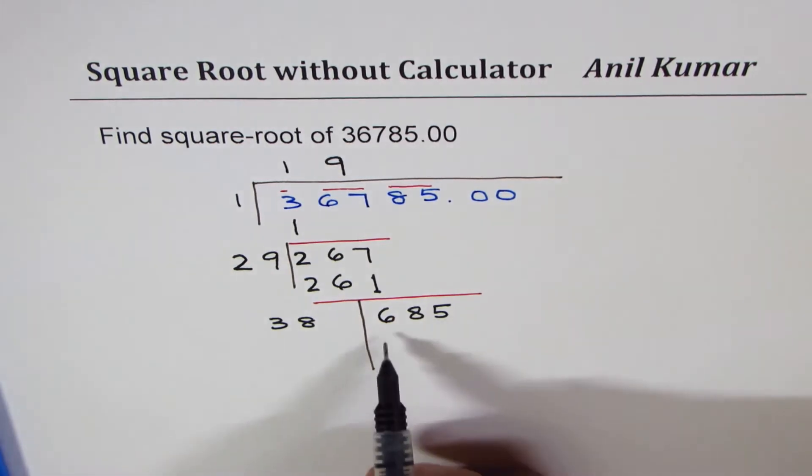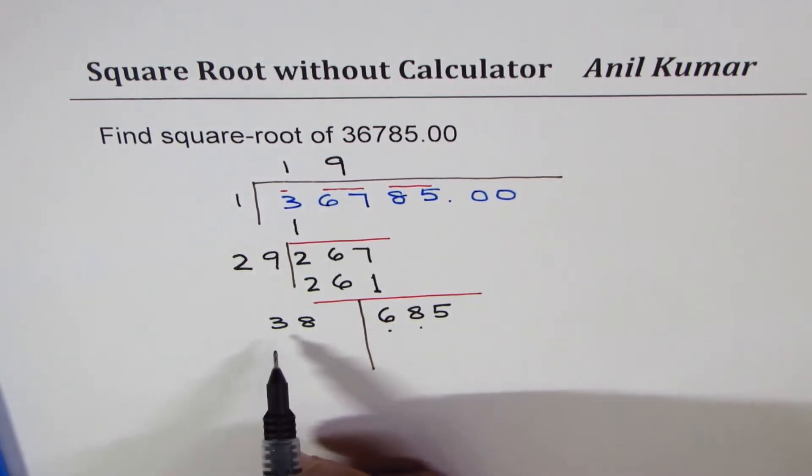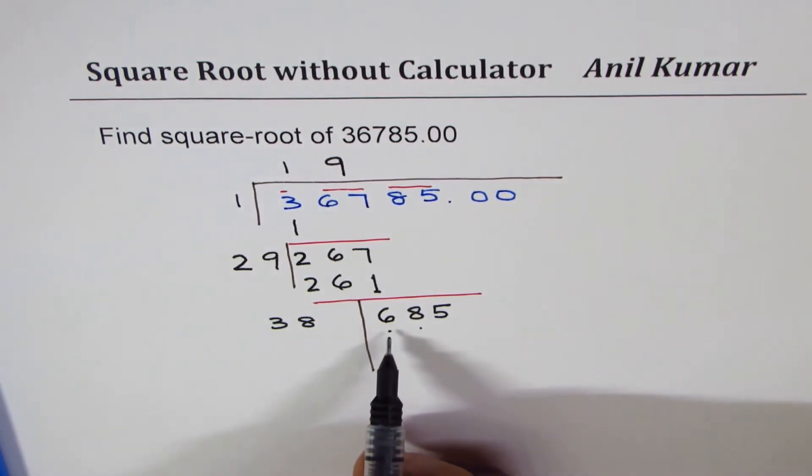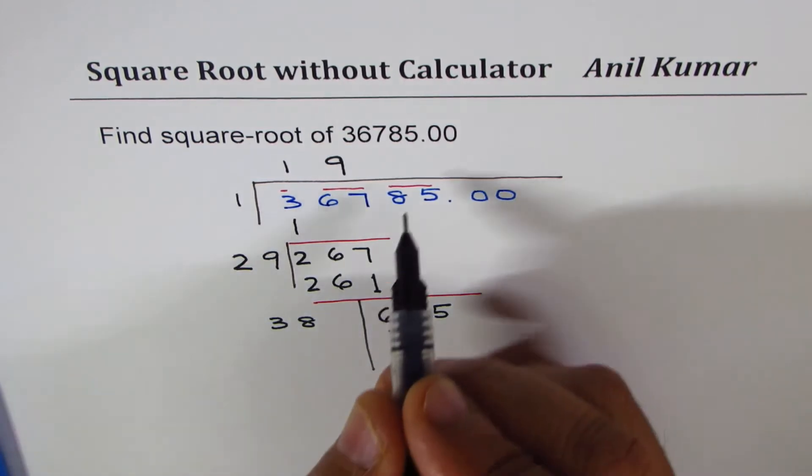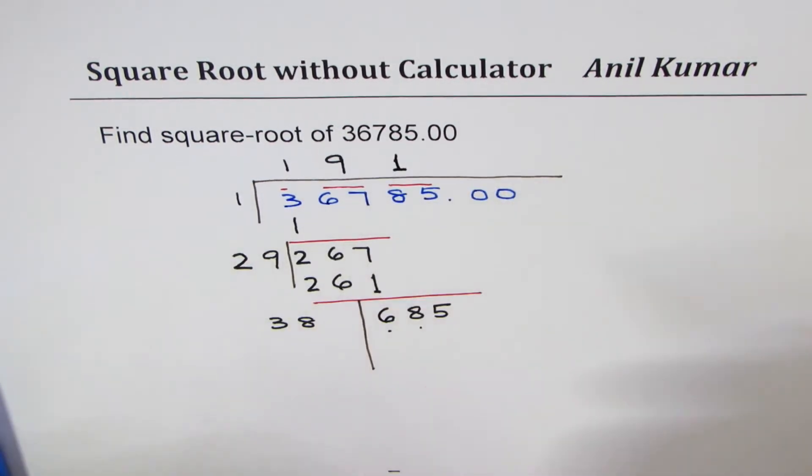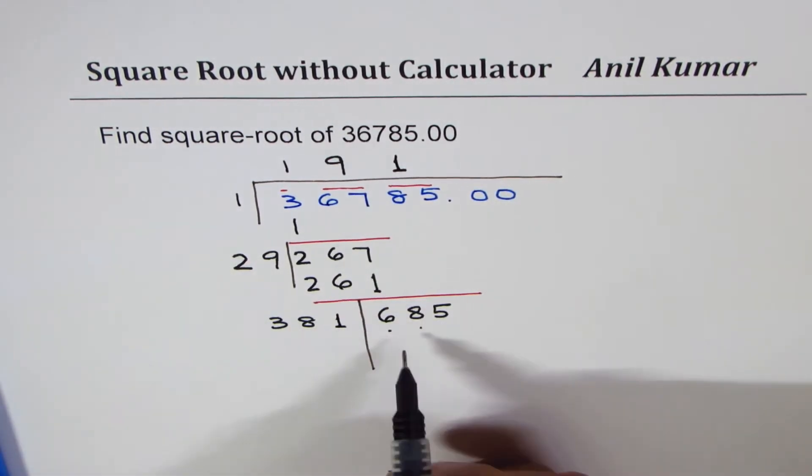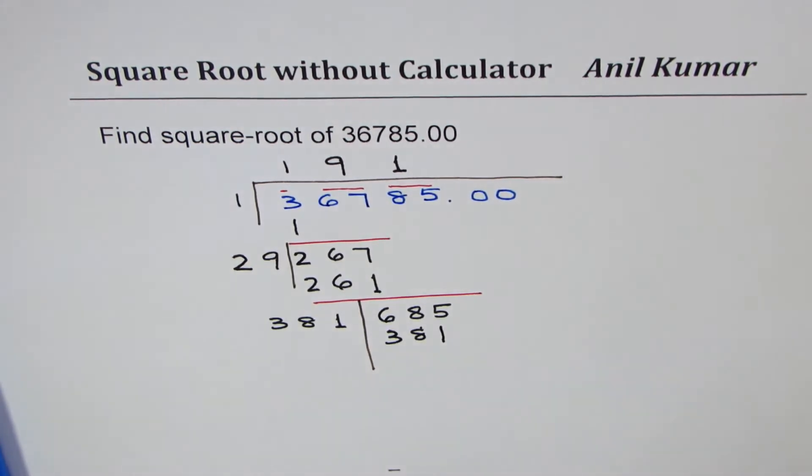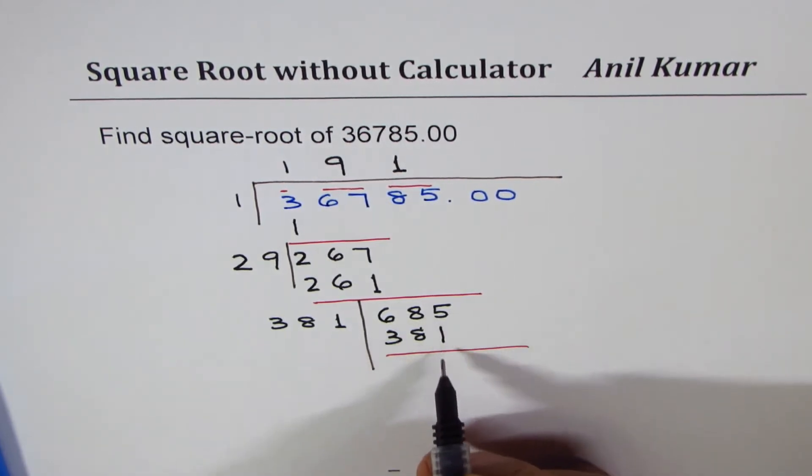So 38, if I take two then it is going to be seven something, so I can only take one. Let me write one here and one there, so that gives me 381. And let's take away 381 from 685. Five take away one is four, we get zero here and we get three here.